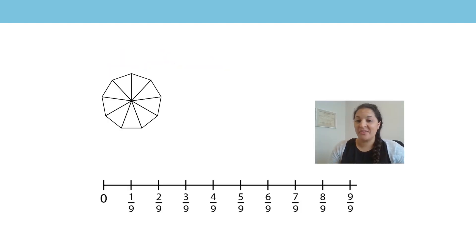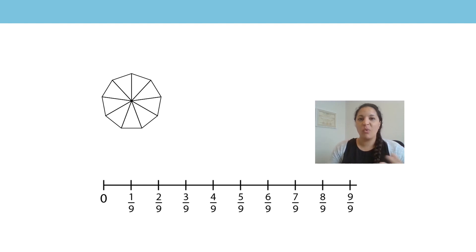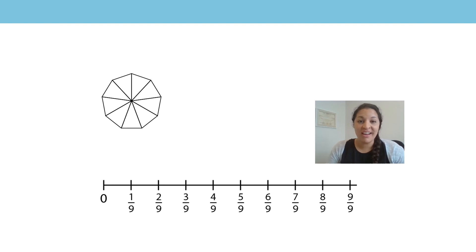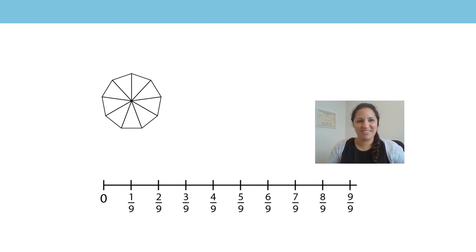Let's have a go using a different shape and a different number line. First of all, what is our unit fraction? Well, my shape and my number line have been divided into nine equal parts, so my unit fraction is one ninth.